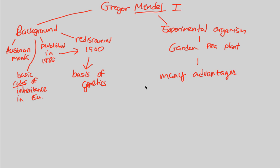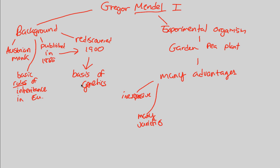First and foremost, this model organism was very inexpensive. It's not hard to find pea plants or produce them. There are also many varieties, which makes sense because we're going to be speaking about genetics, inheritance, and variation of traits. If we have many varieties of a simple but great model organism, that's going to help us understand the basis of genetics, just like Mendel did.